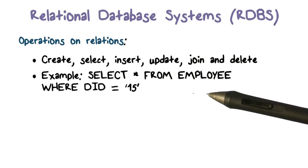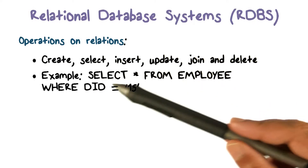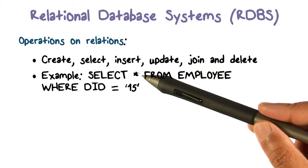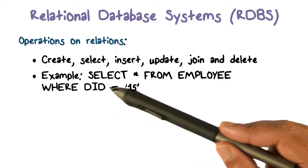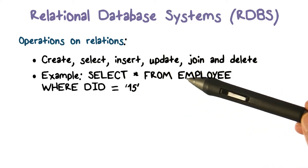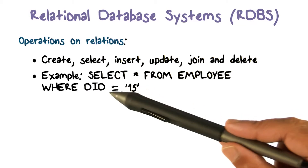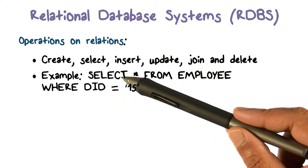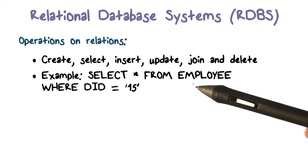We write queries or programs to access data stored in a database, and those programs or queries make use of these operations. For example, 'SELECT * FROM employee WHERE department_id = 15' — select star means everything, so all attribute values from the employee table where the department ID is 15. This gives us information about every employee who works in the department with ID 15.